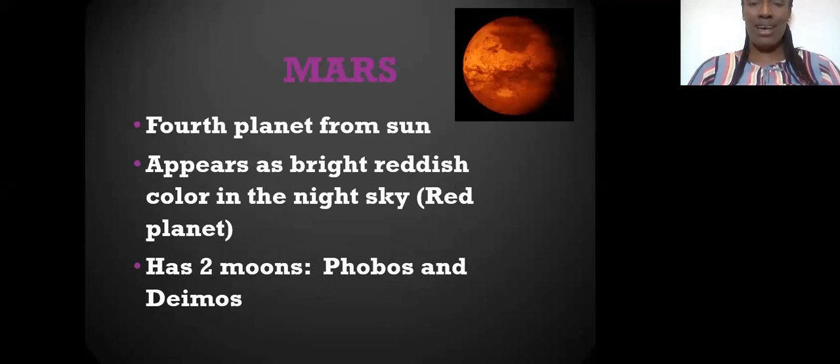Mars, if your favorite color is red, this is your planet. It is the fourth planet from the Sun. It appears as a bright reddish color in the night. It is called the red planet. It has two moons, Phobos and Deimos.